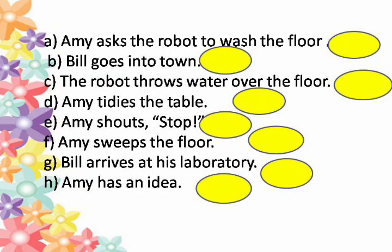Bill goes into town, number one. Amy tidies the table, number two. Amy has an idea, number three. Amy asks the robot to wash the floor, number four. The robot throws water over the floor, number five.